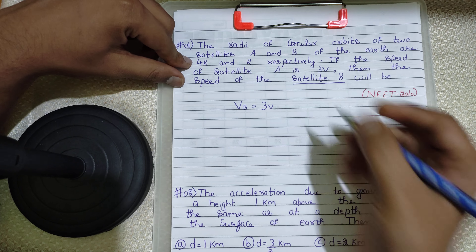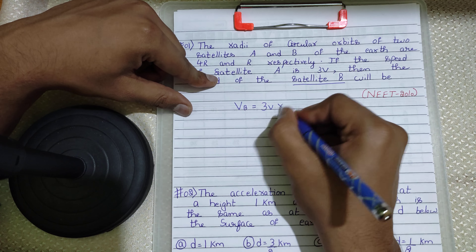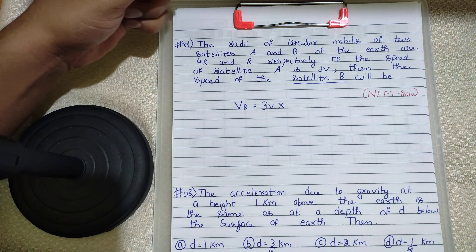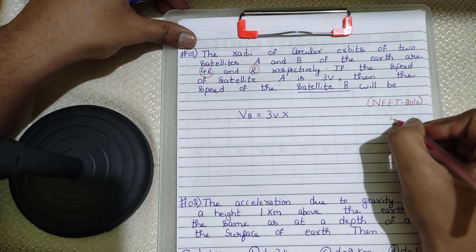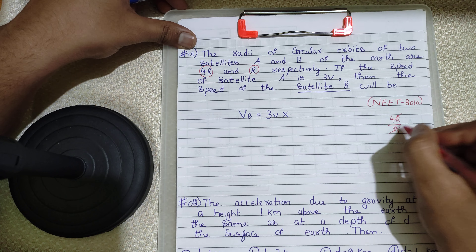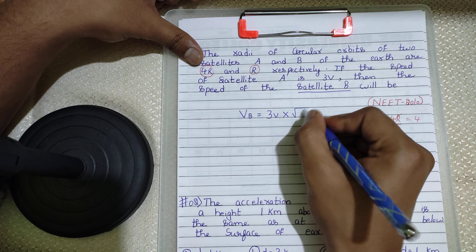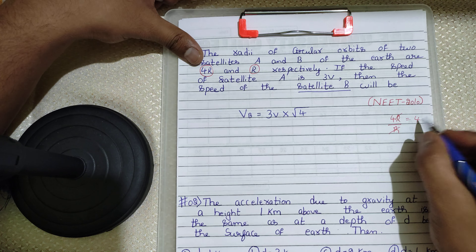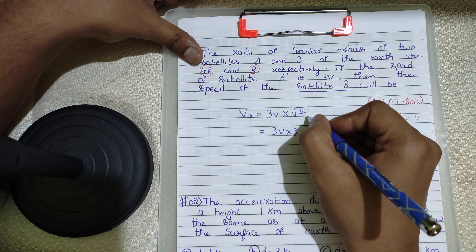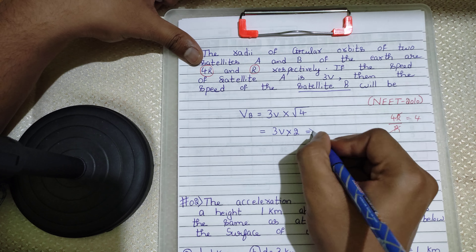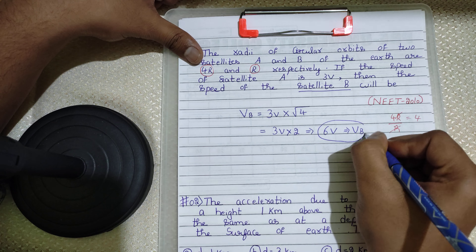First write 3V — that is the speed of satellite A. They have given the radii 4R and R. Divide 4R by R, which gives 4. Now multiply 3V by the square root of 4. The square root of 4 is 2, so 3V × 2 = 6V, which is the velocity of satellite B.